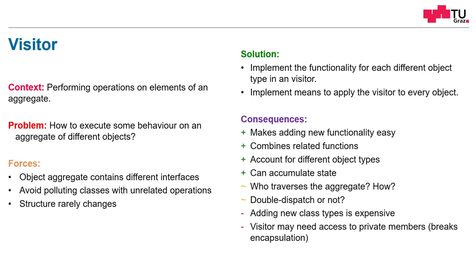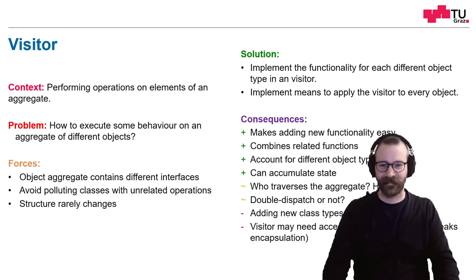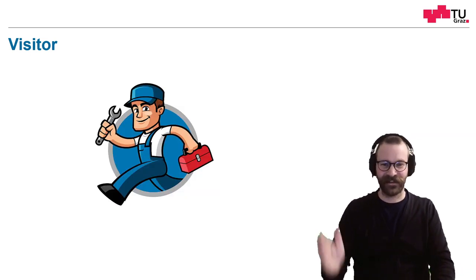Furthermore, a visitor may need access to private members. This breaks encapsulation and this is not possible. Of course, in C++, you could use the friend mechanism, but this is not available in every language and making properties public is also not the most elegant solution. So this can be a conflict. Okay, that's the visitor. Think of the friendly technician traveling from house to house and repairing some stuff. Thank you very much.